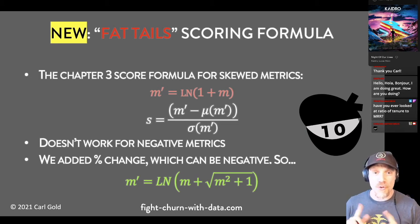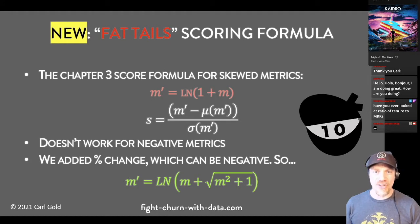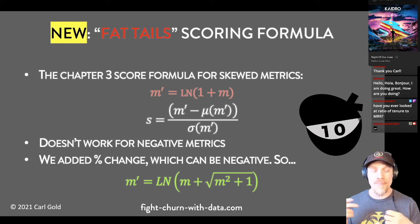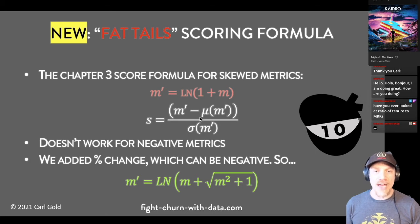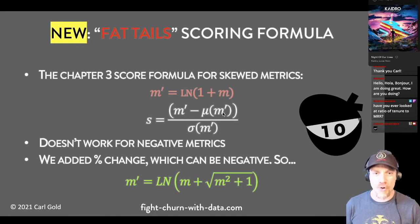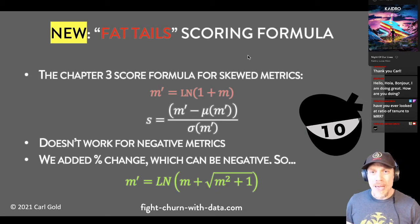I'm about to teach you a new version of the scoring formula. The chapter three version is: you add one to your metric, take the natural logarithm, subtract the mean, and divide by the standard deviation. The problem is this doesn't work for negative metrics — you can't take the log of zero or a negative number. In the new dataset, we added the percent change metric, which can be negative.